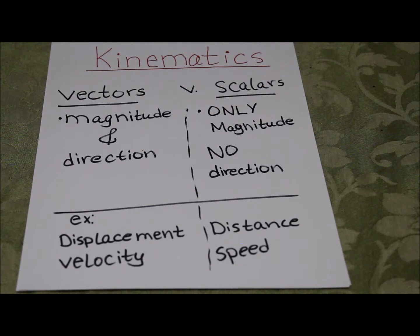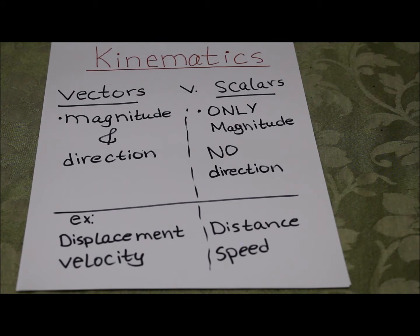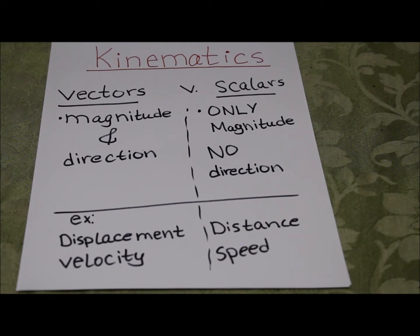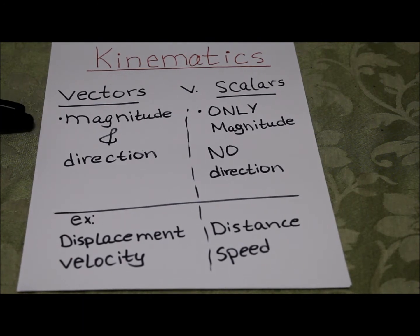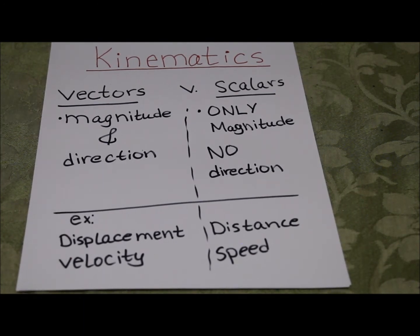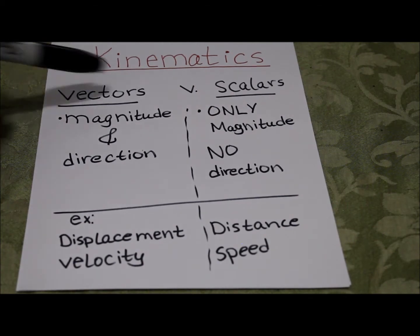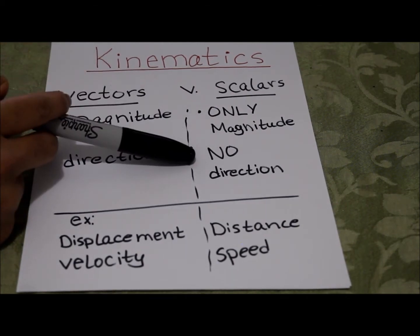As we look at kinematics, kinematics relates to motion of objects but is not concerned with the forces that cause the motion. So when we look at kinematics, we have to know vectors and scalars. Vectors have magnitudes and directions, whereas scalars only have magnitude but no direction.